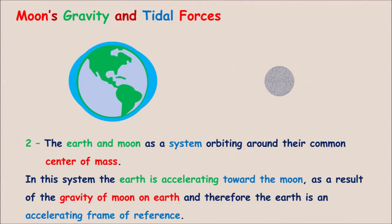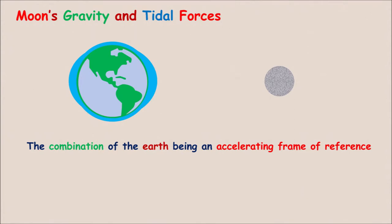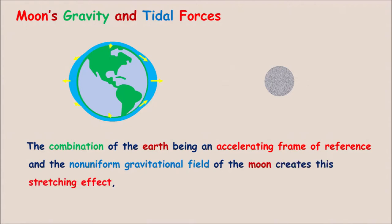The second one is the earth and the moon as a system orbiting around their common center of mass. In this system, the earth is accelerating toward the moon as a result of the gravity of the moon on earth and therefore the earth is an accelerating frame of reference. The combination of the earth being an accelerating frame of reference and the non-uniform gravitational field of the moon creates this stretching effect that causes high tides on both sides of the earth.